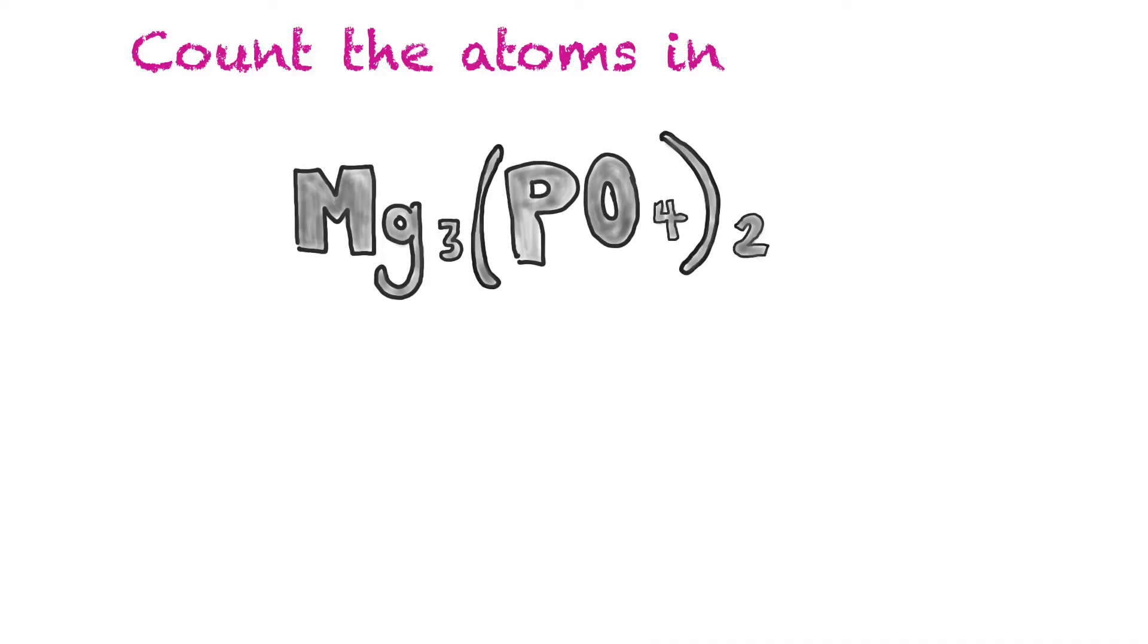If we have Mg3, we have magnesium and there's three of them because there's a subscript three. Then we have phosphorus. There's no subscript, so we know there's one within the bracket, and then we multiply that by two, so one times two is two. Finally, oxygen has a subscript four, but then there's that two again, so four times two is eight. We actually have eight oxygens. If we add all that up, we have 13 atoms in this molecule, which is a compound.